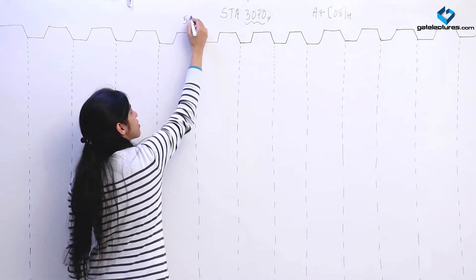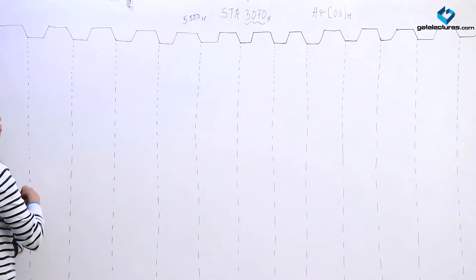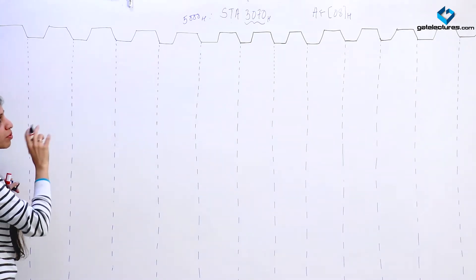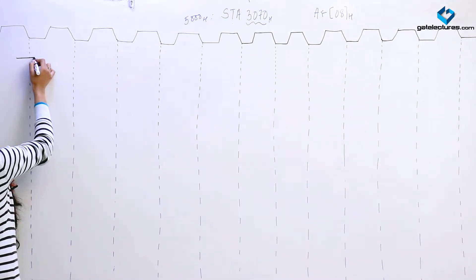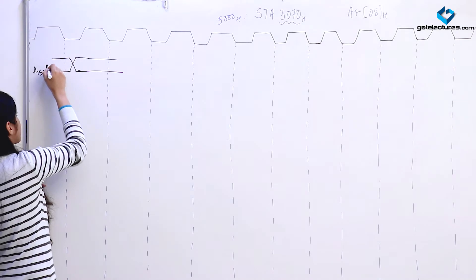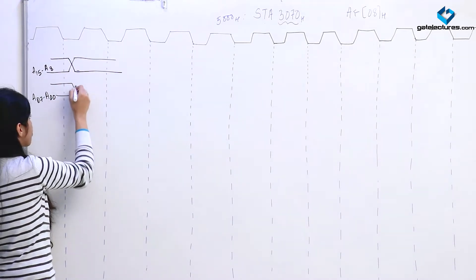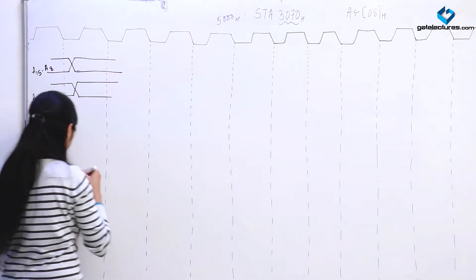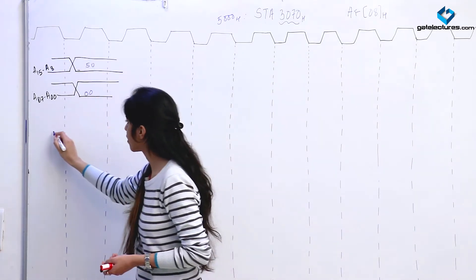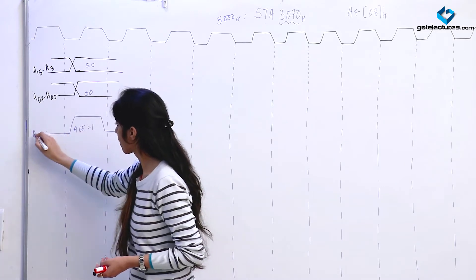Suppose the starting address for this instruction is 5000H, so this instruction is starting at 5000H. First of all we are going to put 5000 on the address bus — 50 on the first 8 bits of the address lines and 00 on the next 8 lines. We are going to put 50 here and 00 here, and along with this we are going to enable the Address Latch Enable, that is we are making ALE high.